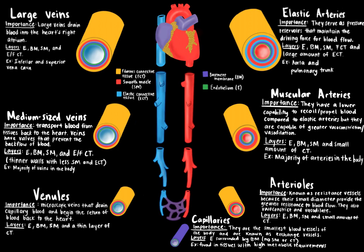Let's first start with elastic arteries. They serve as pressure reservoirs and maintain the driving force for blood flow. Their layers consist of endothelium, a basement membrane, smooth muscle, fibrous connective tissue, and a large amount of elastic connective tissue. Some examples include the aorta and pulmonary trunk.